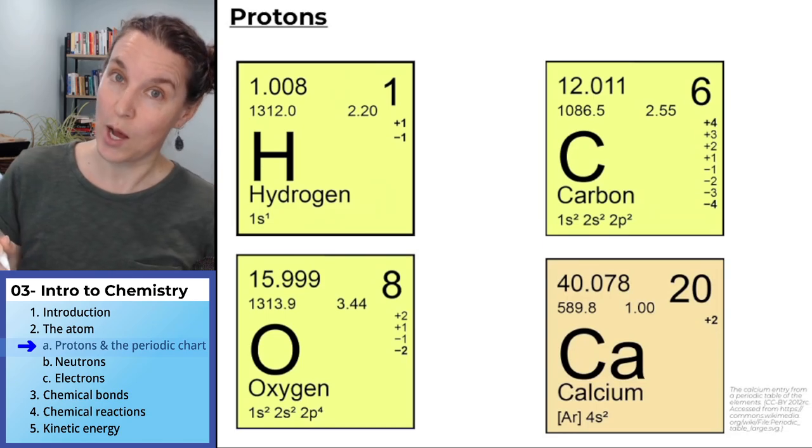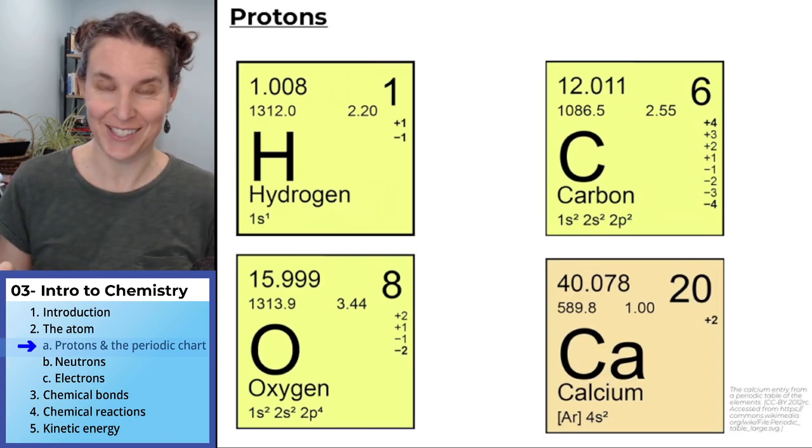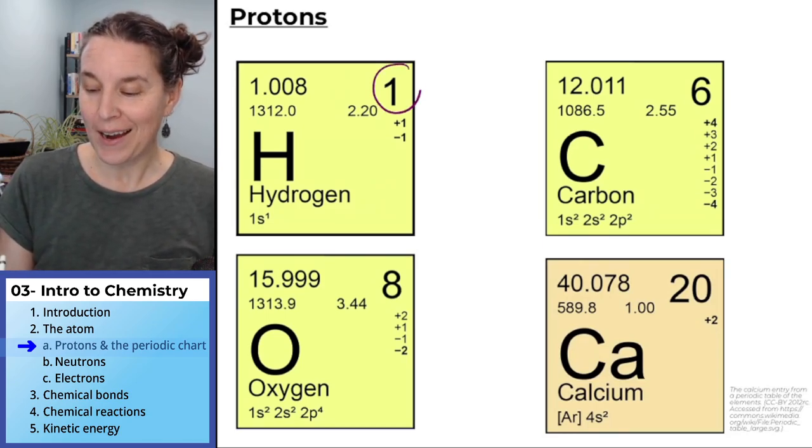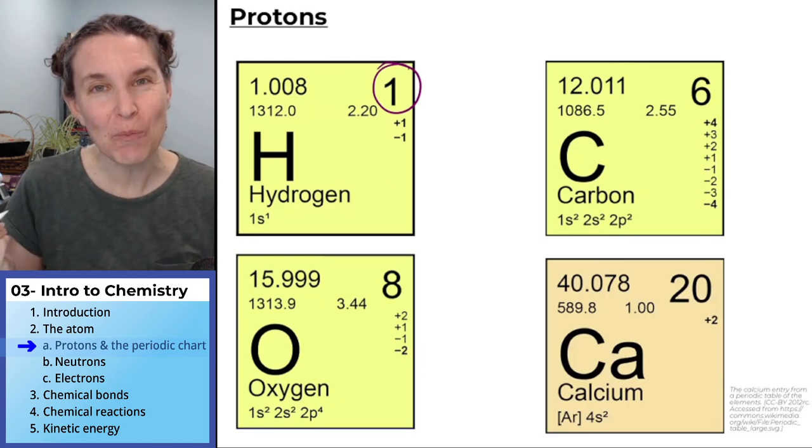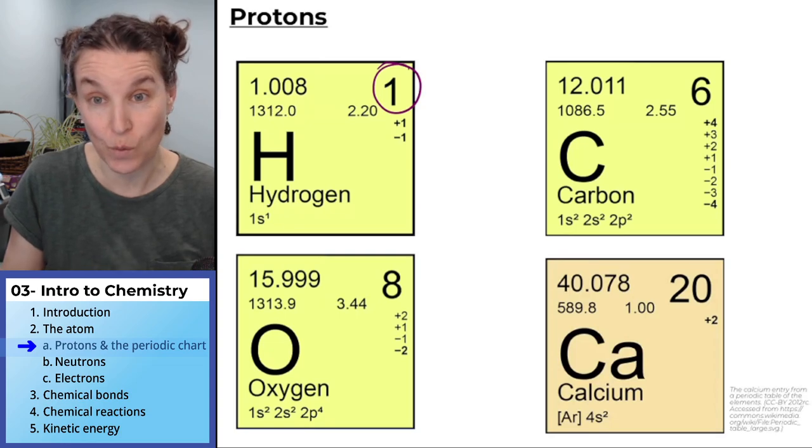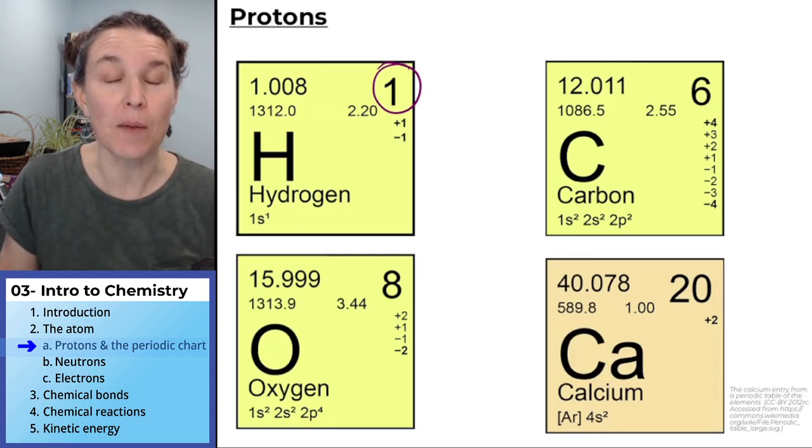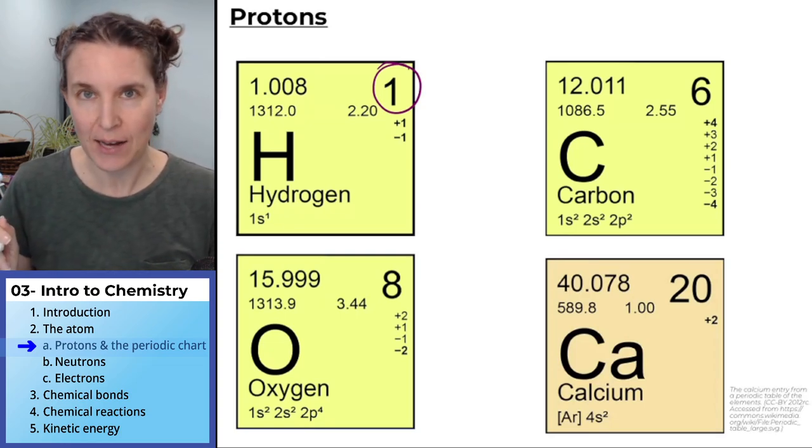I assume you pushed pause and yelled out your answers. I already gave you this one. Hydrogen has one proton in its nucleus. You now know something about every single hydrogen atom on the planet.